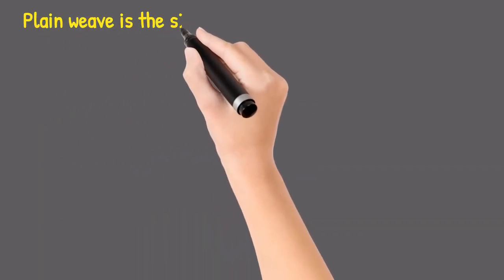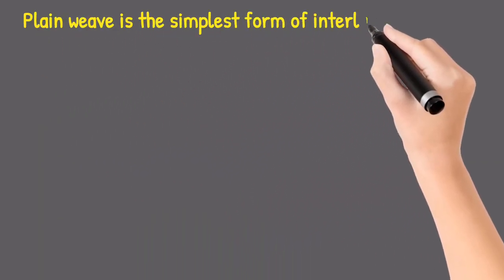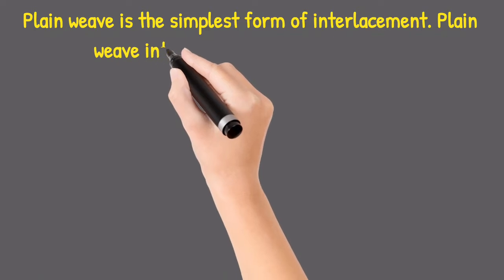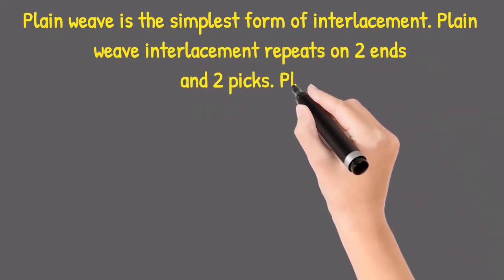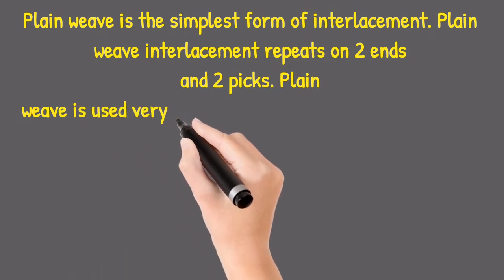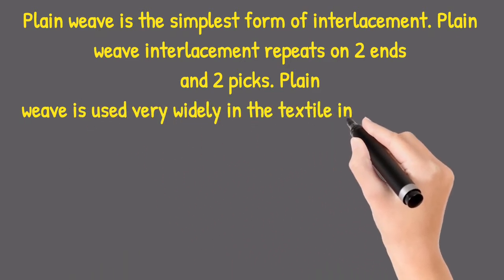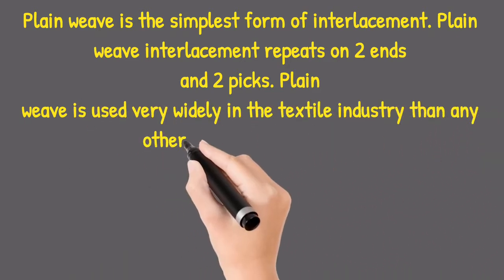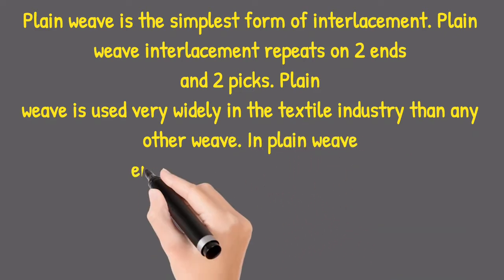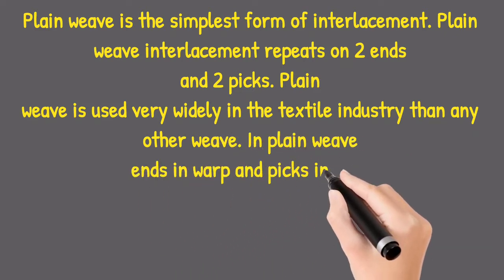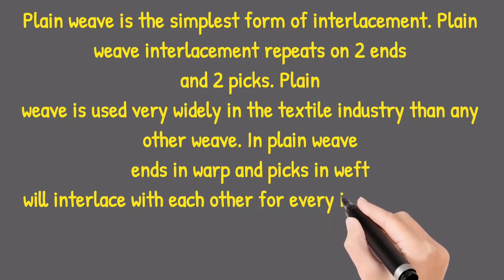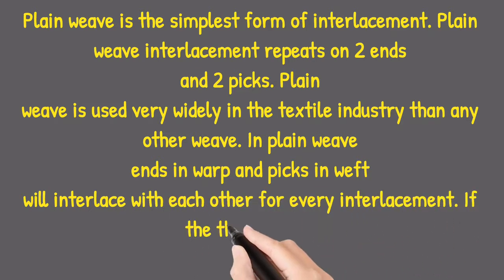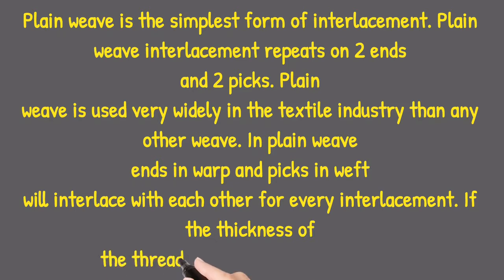Plain weave is the simplest form of interlacement. Plain weave interlacement repeats on two ends and two picks. Plain weave is used very widely in the textile industry than any other weave. In plain weave, ends in warp and picks in weft will interlace with each other for every interlacement if the thickness of the threads in warp and weft is equal.